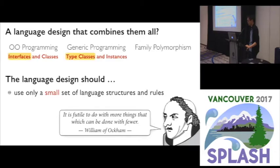A naive combination would result in a language design with too much linguistic complexity. So instead, we want to integrate the different kinds of polymorphism using a small set of language structures and rules. For example, it's hard to miss the similarity between interfaces and type classes, as well as the similarity between classes and type class instances. A succinct design would allow us to express both with only one pair of these language structures.